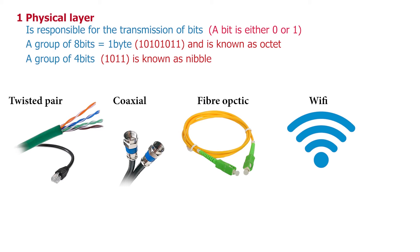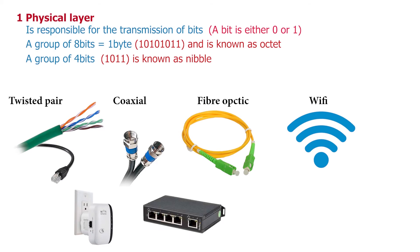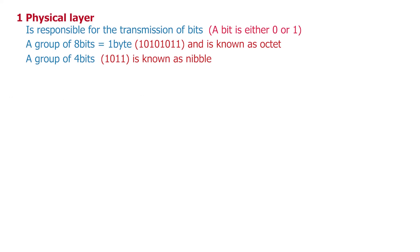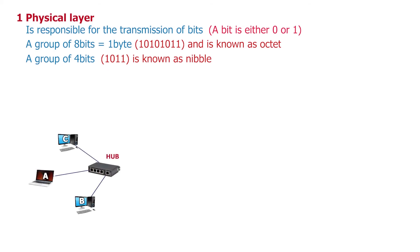Other devices which work at the physical layer include repeaters, which exist to amplify and regenerate weaker signals in transmission. A hub is also a layer one device because it forwards data using physical layer standards. As mentioned in previous lessons, hubs create one collision domain and one broadcast domain across all their ports, because when a hub receives electrical signals from one port it repeats them to all other ports except the one it came in on.